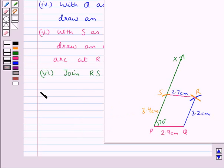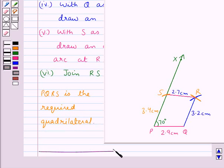So now we say that PQRS is the required quadrilateral. This completes the session. Hope you have understood the solution for this question.